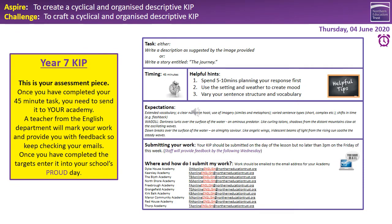Okay Year 7, today's activity is really important — it's your Year 7 key indicator piece, so it's an assessment piece. Once you've completed your 45-minute task, you need to send it to your academy. The emails are on the slide. A teacher from the English department will mark your work and provide you with feedback, so keep checking your emails. Once you've completed the targets, enter it into your school's proud day as well. The task is: you either write a description suggested by the image provided on the following slide, or you can write a story entitled 'The Journey.' You've got 45 minutes. I want you to spend 5-10 minutes planning your response first. Use setting and weather to create mood, and vary your sentence structures and vocabulary — you're using all of the skills we've used previously. Have a look at the image that follows and then choose which task you're going to do. Remember 45 minutes, and please remember once you've done this, you must submit it to your academy.